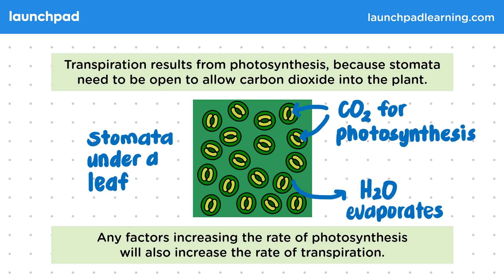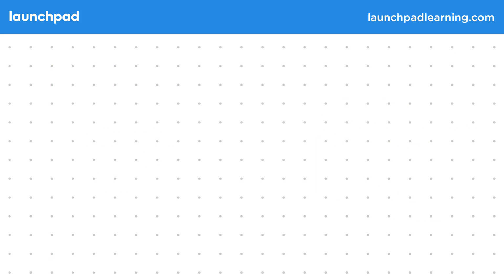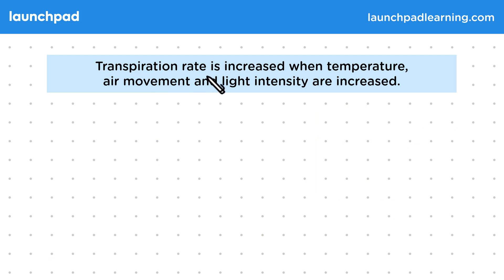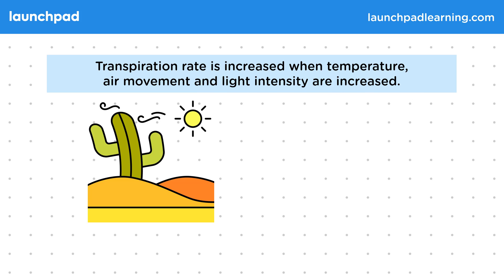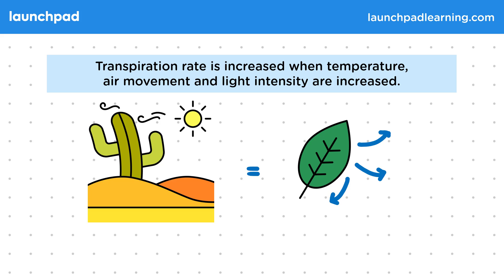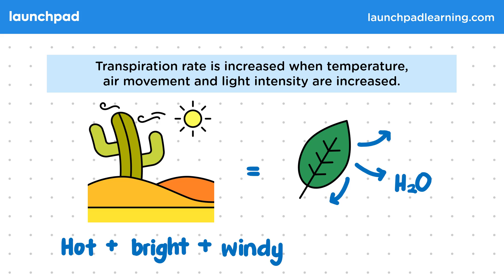Can you think of what else might increase the rate of transpiration? Transpiration rate is increased when temperature, air movement, and light intensity are increased. This diagram shows the sort of environment in which transpiration would be very high. Any factors that increase the rate of evaporation will also increase transpiration rate, so if it's hot, bright, and windy there will be a high rate of transpiration.